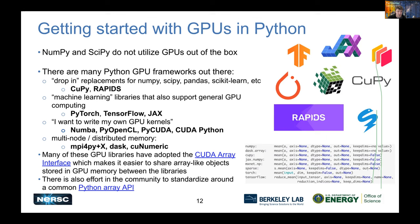If you want to write your own GPU kernels from Python, you can use Numba, PyOpenCL, PyCUDA, or CUDA Python. To scale out your Python code to use multiple GPUs or multiple nodes, MPI4Py combined with your GPU package is one approach, and Dask is another popular tool for distributed Python. Legate NumPy from NVIDIA may provide another way of scaling to multiple nodes, though it's a bit more experimental at the moment.